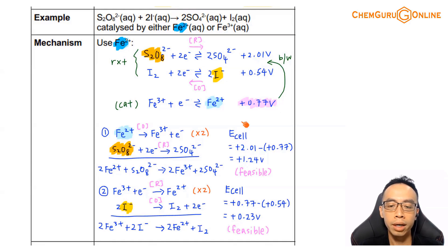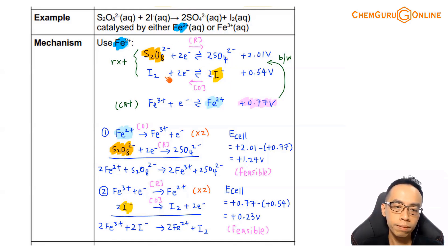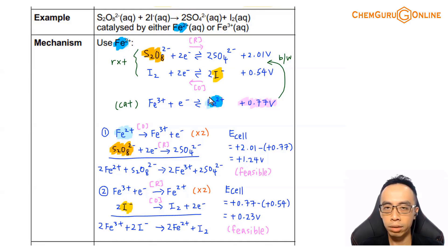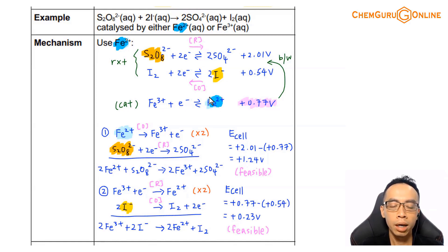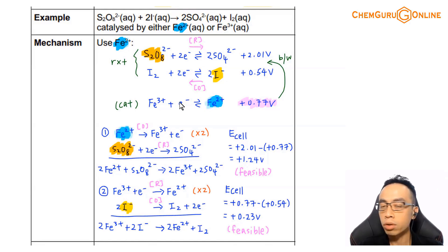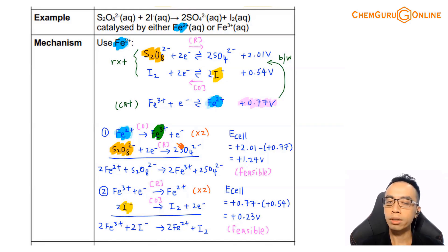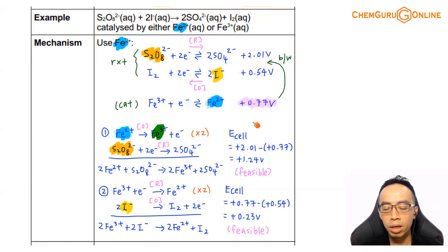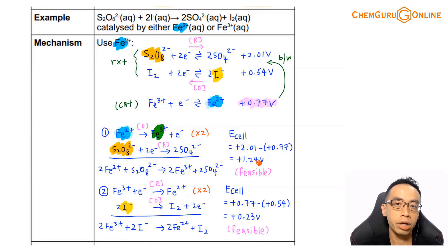For this reaction, S₂O₈²⁻ undergoes reduction and I⁻ undergoes oxidation. If Fe²⁺ is given as the catalyst, in Step 1 we focus on the transition metal: Fe²⁺ oxidizes to Fe³⁺. Since this is oxidation, we pair it with a reduction — S₂O₈²⁻ undergoes reduction. We balance the equation and calculate the E-cell as reduction of S₂O₈²⁻ minus oxidation of Fe²⁺, showing the E-cell is positive and therefore the step is feasible.